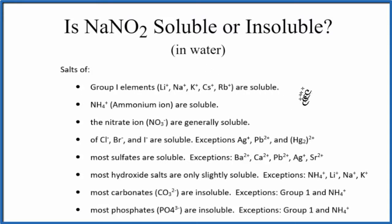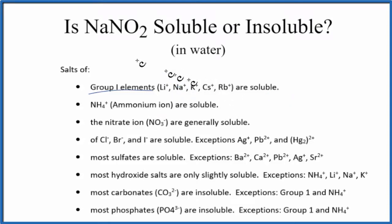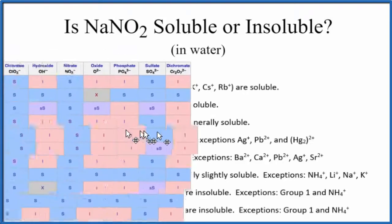We can know that by memorizing these general solubility rules, which say group 1 elements — that's group 1 on the periodic table, like Na — will be soluble. Those ions will be very soluble, so we expect NaNO2 to be very soluble in water.